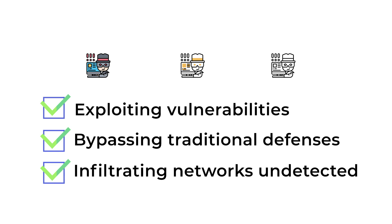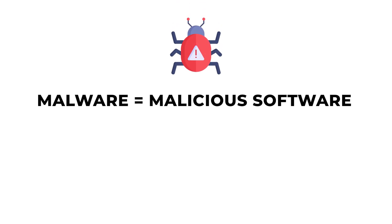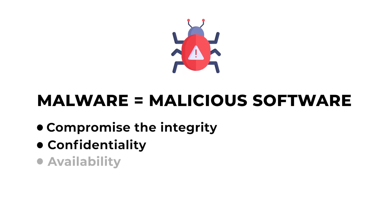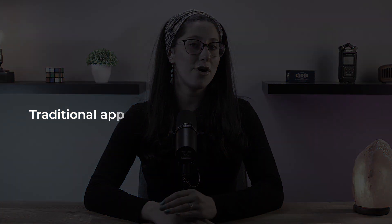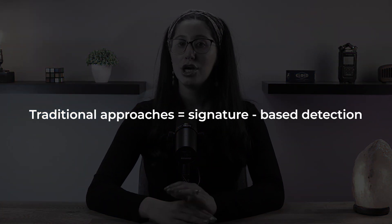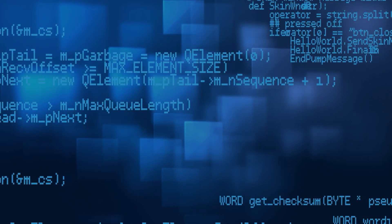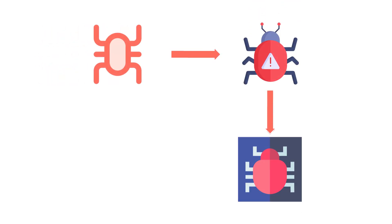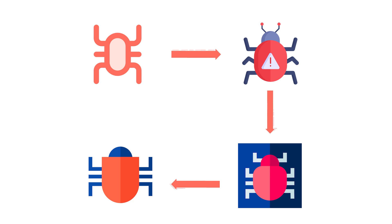One of the most common tools these criminals use to carry out these attacks is malware. Malware, short for malicious software, includes a wide range of harmful programs designed to compromise the integrity, confidentiality, and availability of data and systems. Traditional approaches to malware protection usually relied on signature-based detection, which involves identifying known patterns of malicious code. However, this reactive method is basically useless when put against polymorphic malware that can rapidly change its code to get around such detection. And that's where the Zero Trust model comes in.